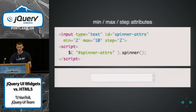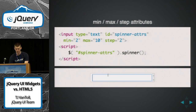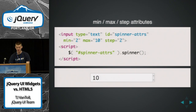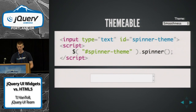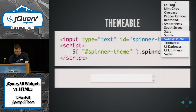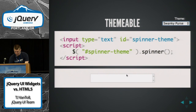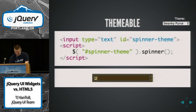UI Spinner, to contrast — the same basic story. You get support for min, max, and step attributes. It's smart enough to look at the attributes on the input, so you don't have to specify those as options. It's again themable — Swanky Purse.